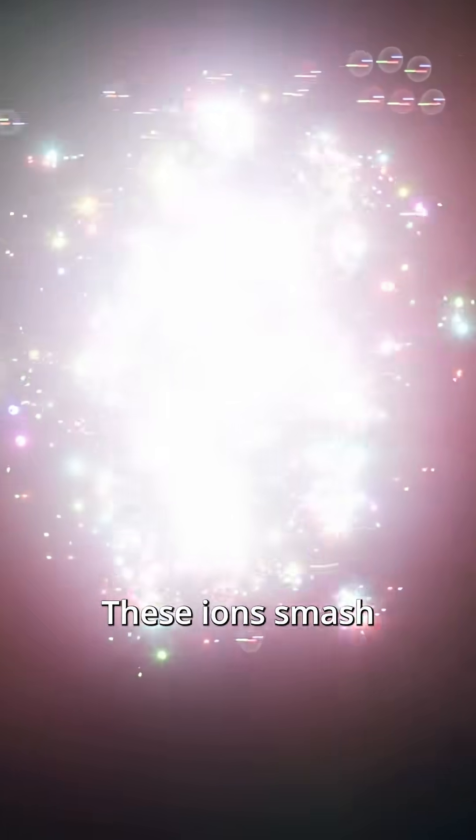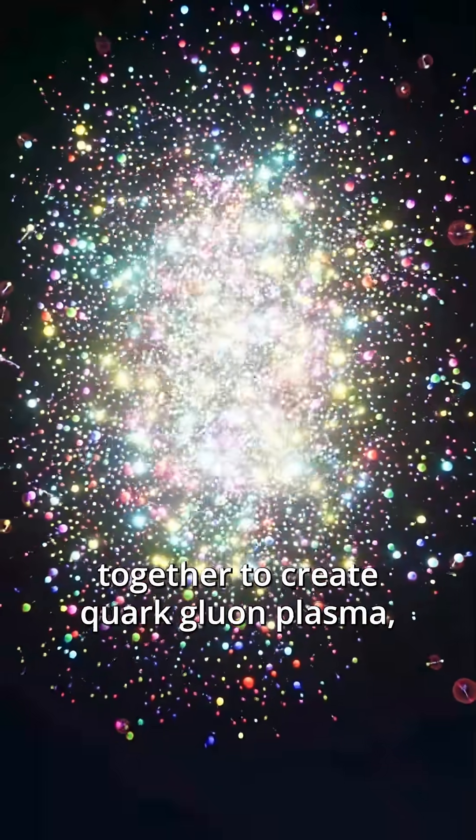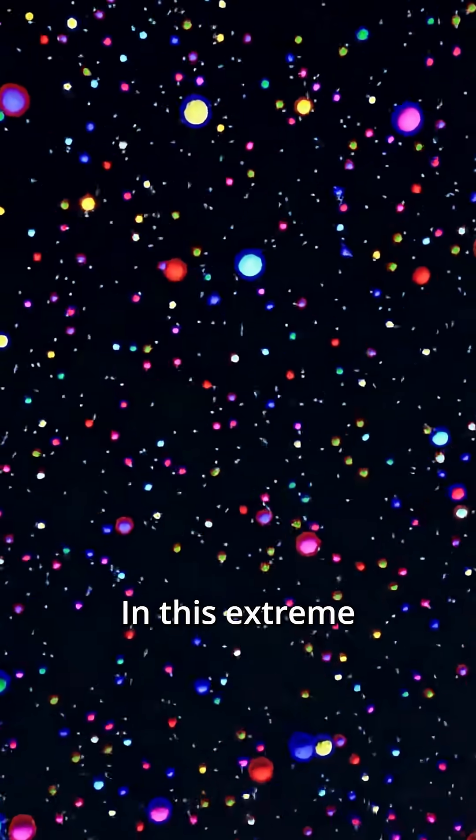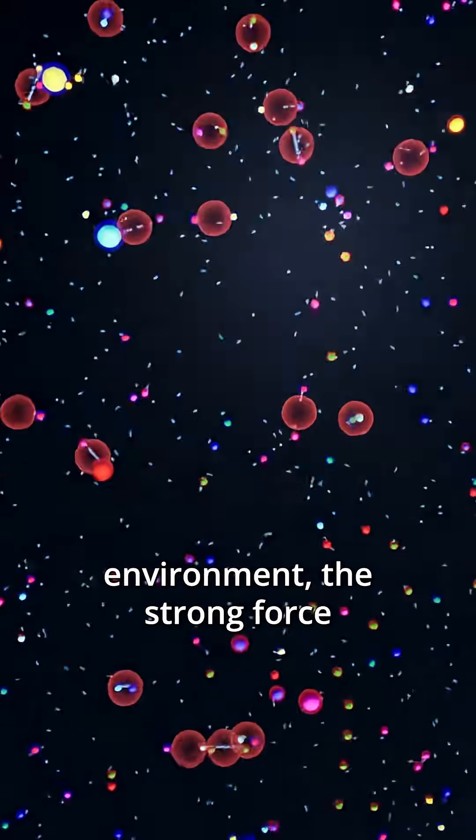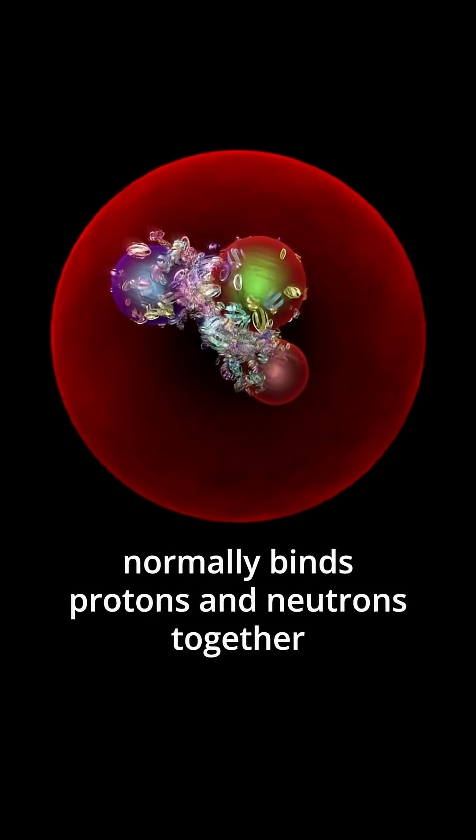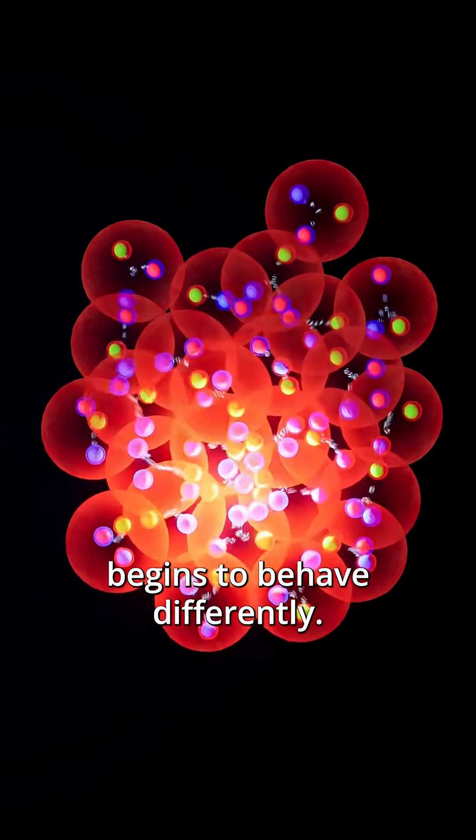These ions smash together to create quark-gluon plasma, a unique state of matter that existed shortly after the Big Bang. In this extreme environment, the strong force, which in cold conditions normally binds protons and neutrons together, begins to behave differently.